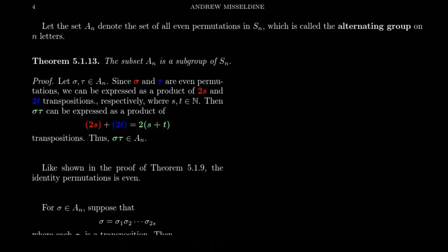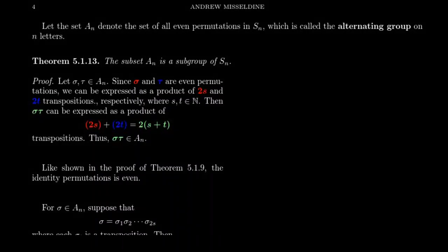We established this using an argument involving the determinant. We're going to take the set A_n and call it the set of even permutations in S_n. The reason we call it A_n is that it's known as the alternating group on n letters. We call it a group rather than a set because this subset is in fact a subgroup of S_n.